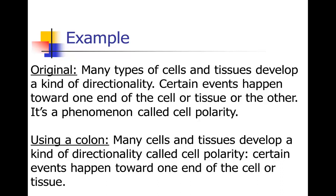It's kind of simple language, but it's a little bit boring. All those sentences have the same simple structure, and really the purpose of those three sentences is simply to tell you what cell polarity is. So what I did when editing was to use a colon to introduce the definition of cell polarity and pull all these little pieces together. The revised sentence reads: 'Many cells and tissues develop a kind of directionality called cell polarity: certain events happen toward one end of the cell or tissue.' Now we only need one sentence, and it's a little bit more interesting to read because of the variety.